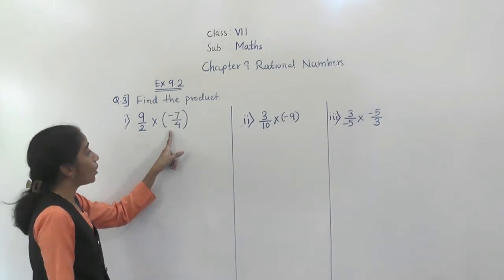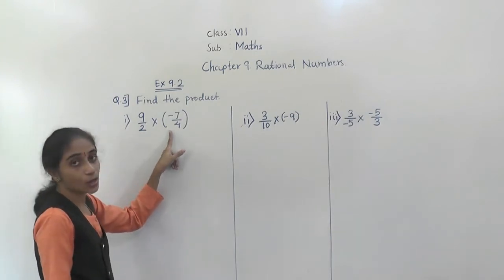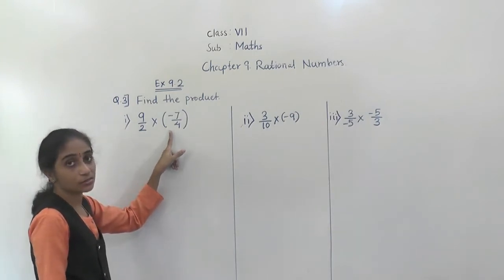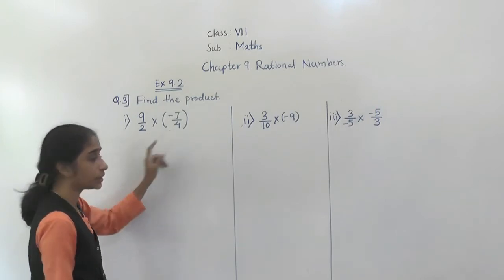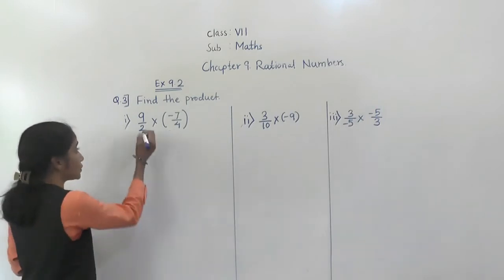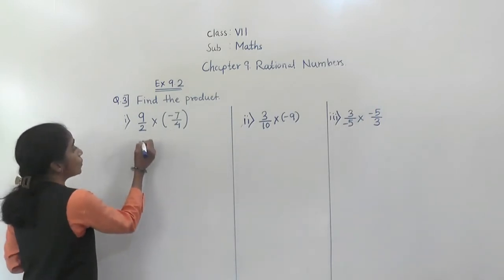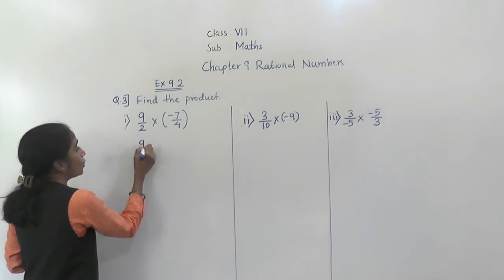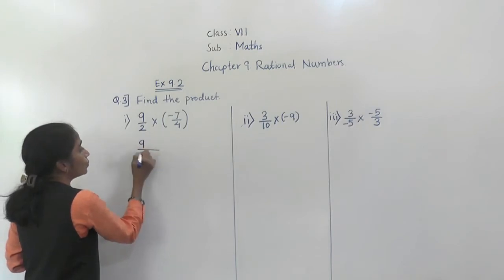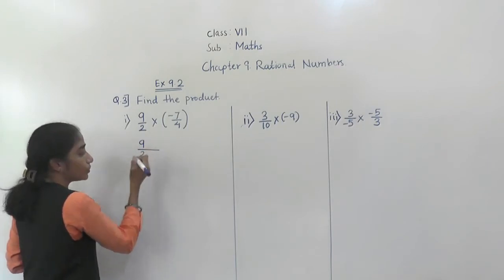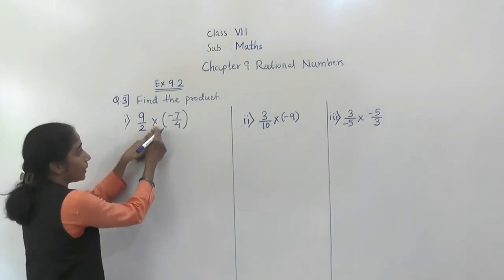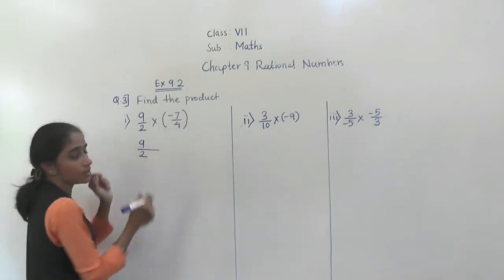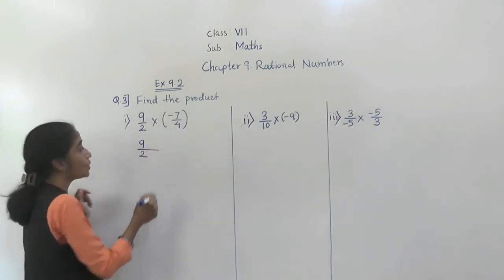How are we solving these in fractions? The same way we have to solve these also in rational numbers. So, 9 upon 2 we have to write, multiplied by, in bracket, minus 7 upon 4.